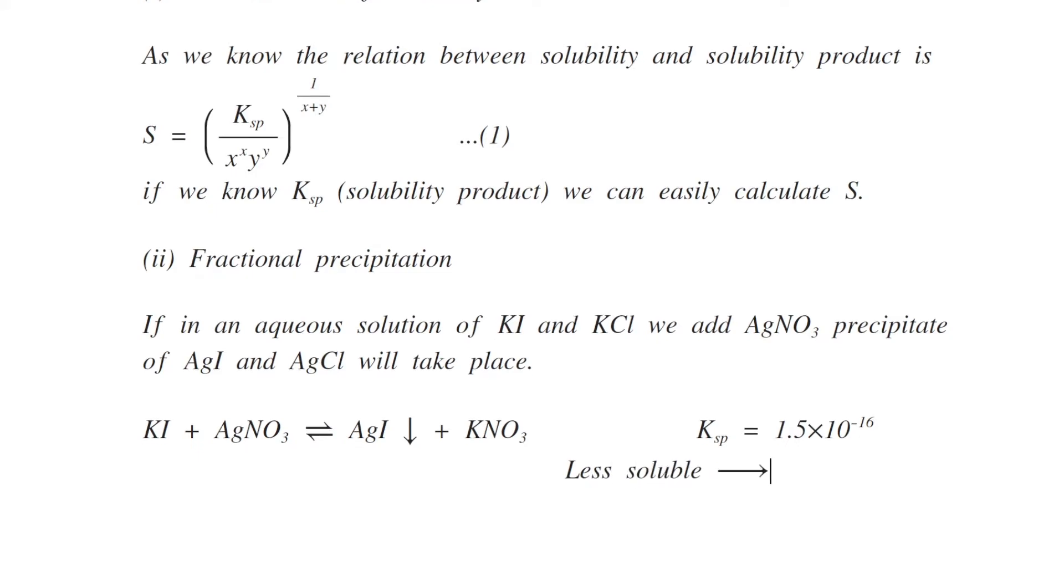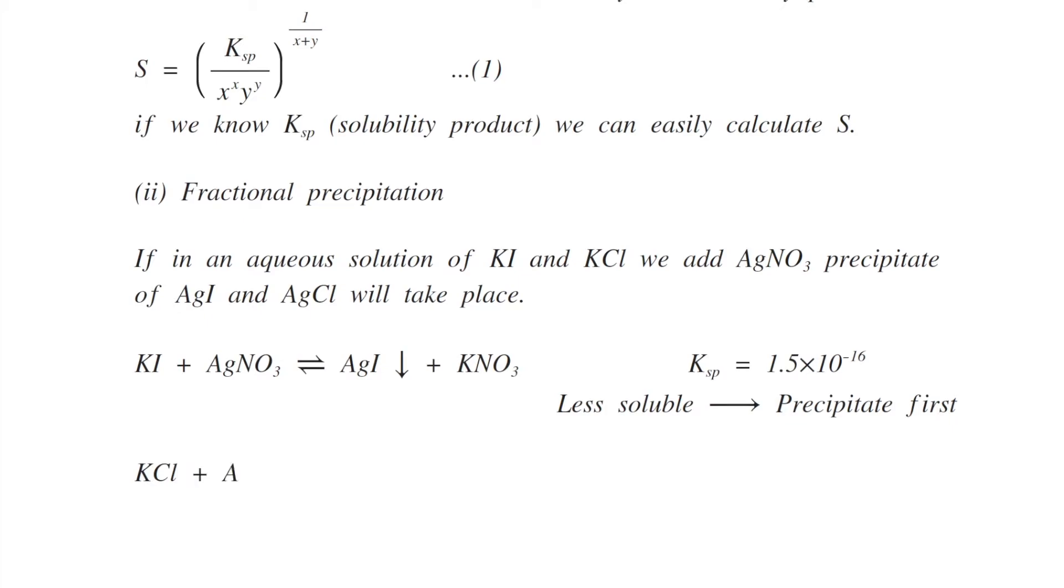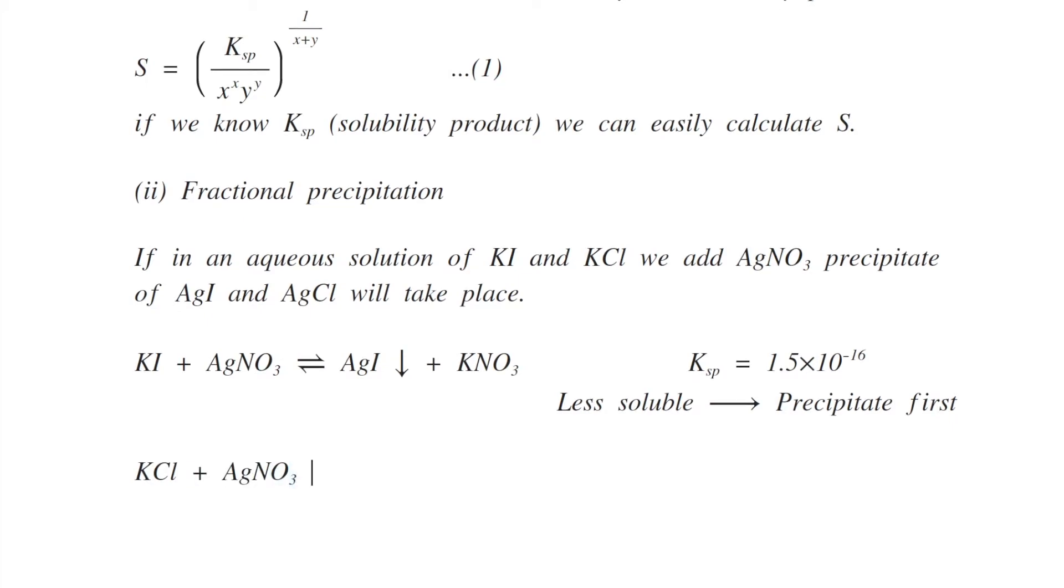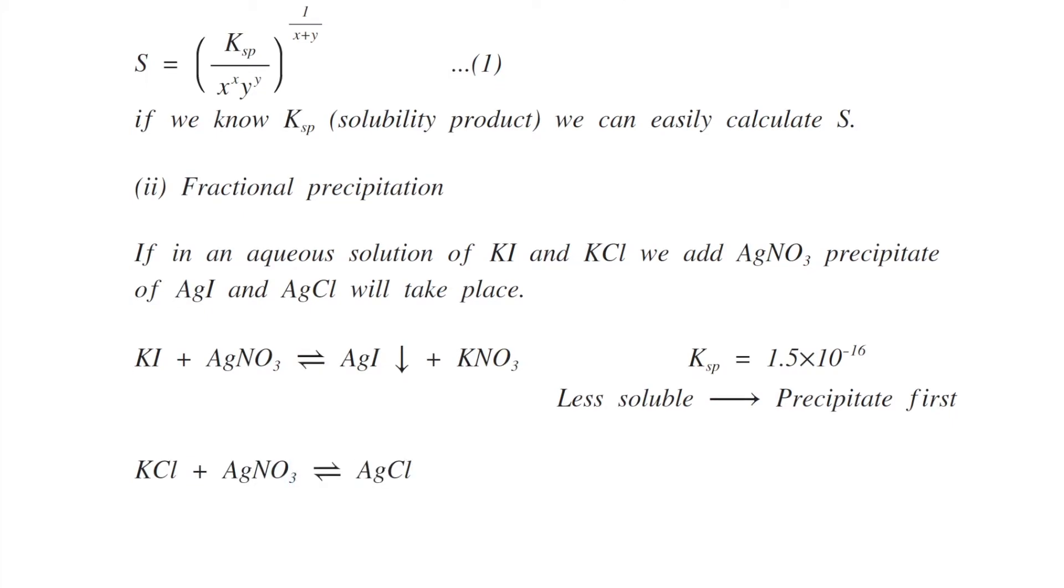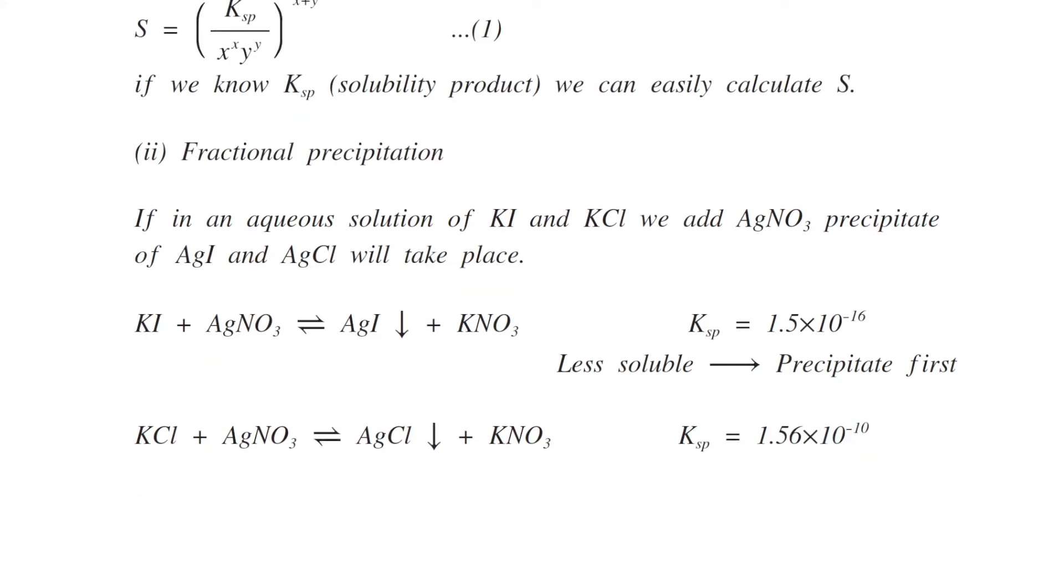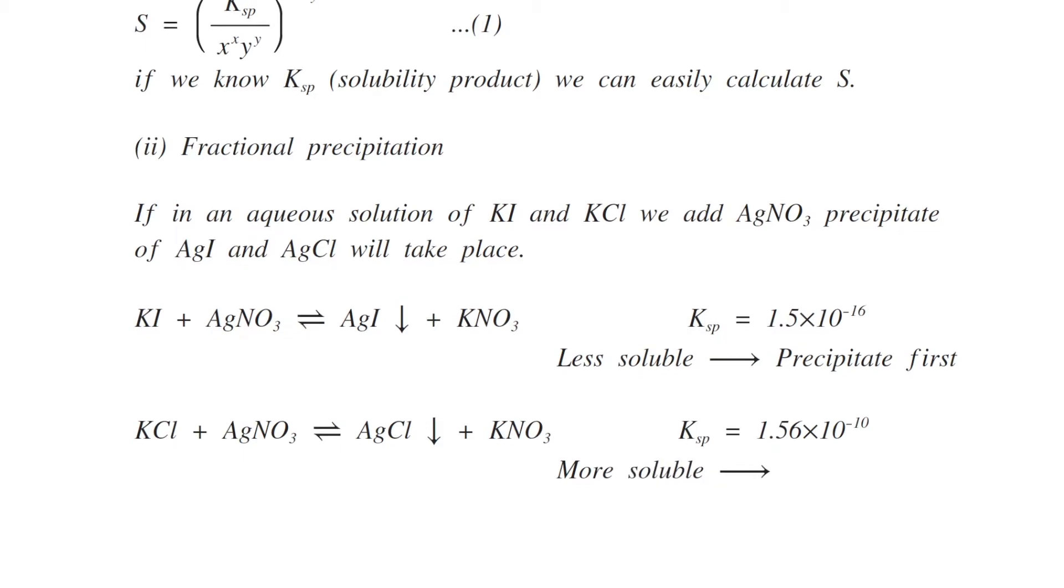But the solubility product of both products AgI and AgCl are different. For silver iodide it is 1.5 × 10^-16, while for silver chloride it is 1.56 × 10^-10. So silver chloride is more soluble as compared to silver iodide.